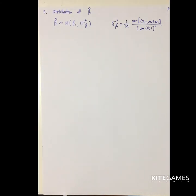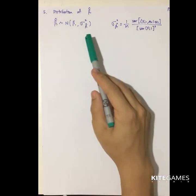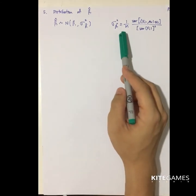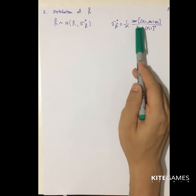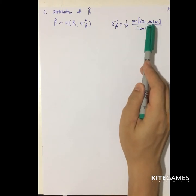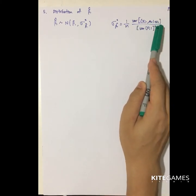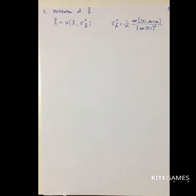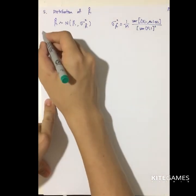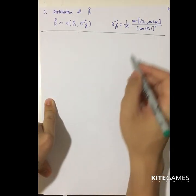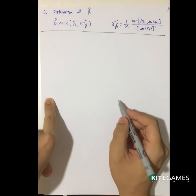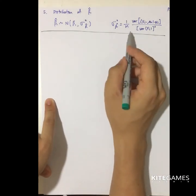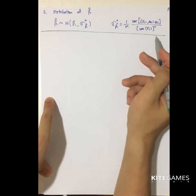In particular, the sample variance will have this form: 1 divided by n times the variance of (x_i minus μ_x) times u_i, divided by the square of the variance of x_i. I'm going to show that the sample variance of beta 1 hat has this form.